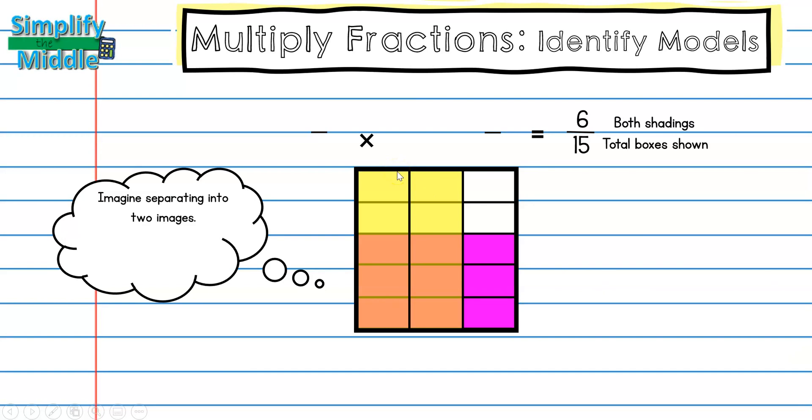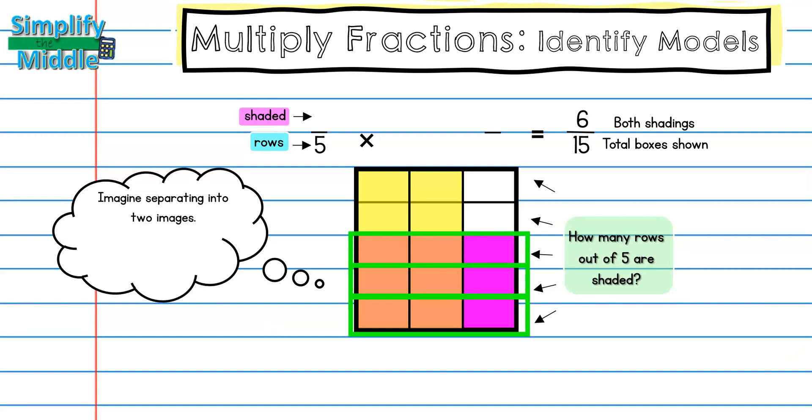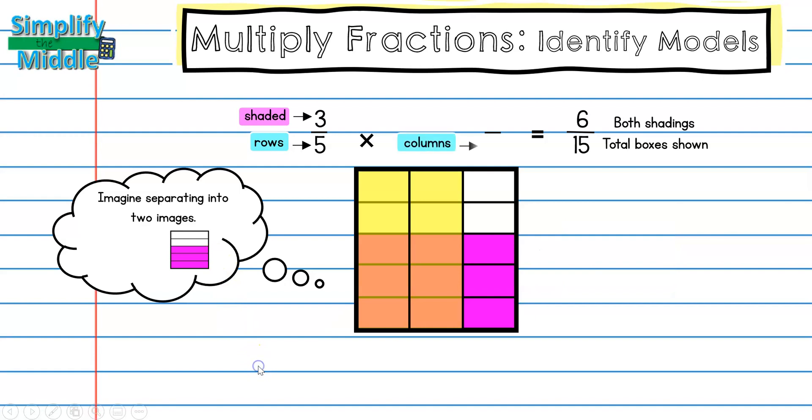Now I'm ready to start thinking about what two separate images combined to make this one. So I'm going to first start by looking at my rows. So going across, I have a total of five arrows, which means I have five rows. That represents the denominator. For the numerator, I should ask how many rows out of five are shaded? And I can see I have one, two, three. Remember, I am looking all the way across and the shading has to carry all the way across. So I have 3/5ths. If I was to draw it separately, it would look like this.